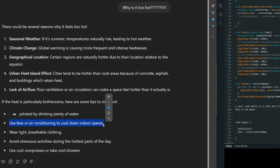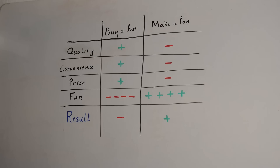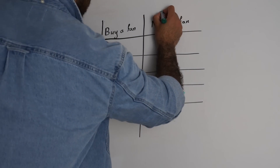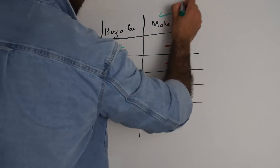I need a fan. Now I have two options. The first one: buy a fan on Amazon and get it the next day. The second one: try and make the fan myself. After deep thinking and reviewing the pros and cons of each option, the ultimate answer was clear — I'll make the fan myself.